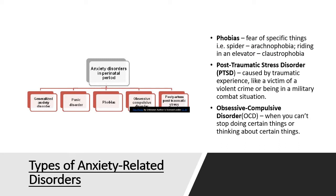The types of anxiety related disorders are phobias, PTSD, and OCD. Phobias are fear of specific things — for example, spiders (arachnophobia) or riding in an elevator (claustrophobia). PTSD, or post-traumatic stress disorder, is caused by traumatic experiences like being a victim of violent crime or military combat. OCD, or obsessive compulsive disorder, is when you cannot stop doing or thinking about certain things.